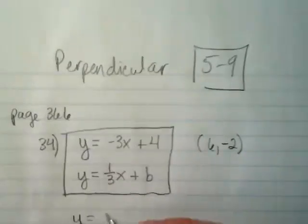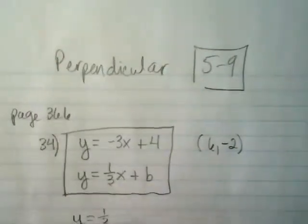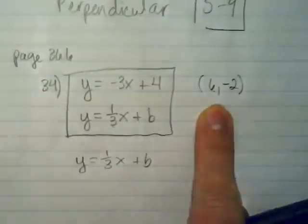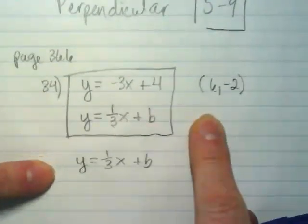I know that y equals mx plus b. What's my m here? One-third. Thank you. I can take this point that is on this line, and I can plug the x and y in, and I can go find the b.